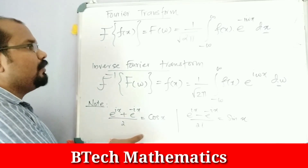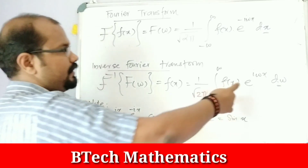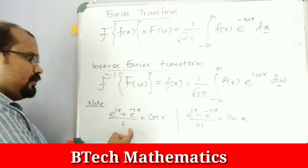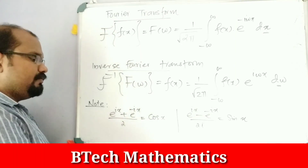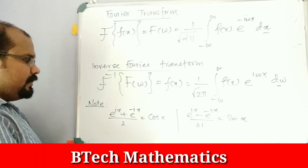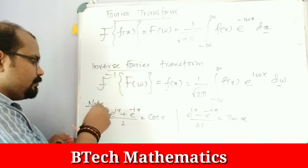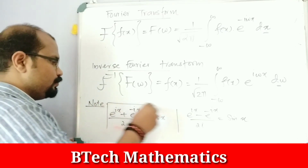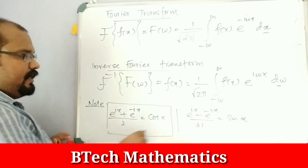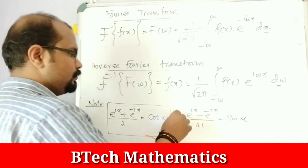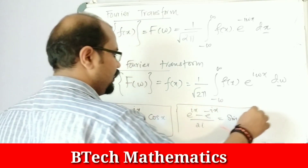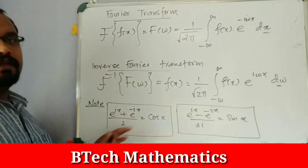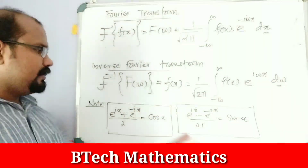We will use two Euler formulas: e raised to ix plus e raised to minus ix, divided by 2, equals cos(x); and e raised to ix minus e raised to minus ix, divided by 2i, equals sin(x).